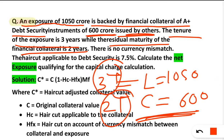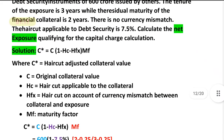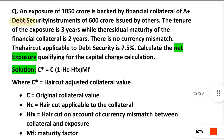There is a maturity mismatch — the loan is for three years but the collateral is only for two years. There is no currency mismatch, meaning the loan and collateral are both in rupees. The haircut applicable to the debt security is 7.5%. We have to calculate the net exposure qualifying for the capital charge. First, we check whether there is a maturity mismatch — and yes, there is.